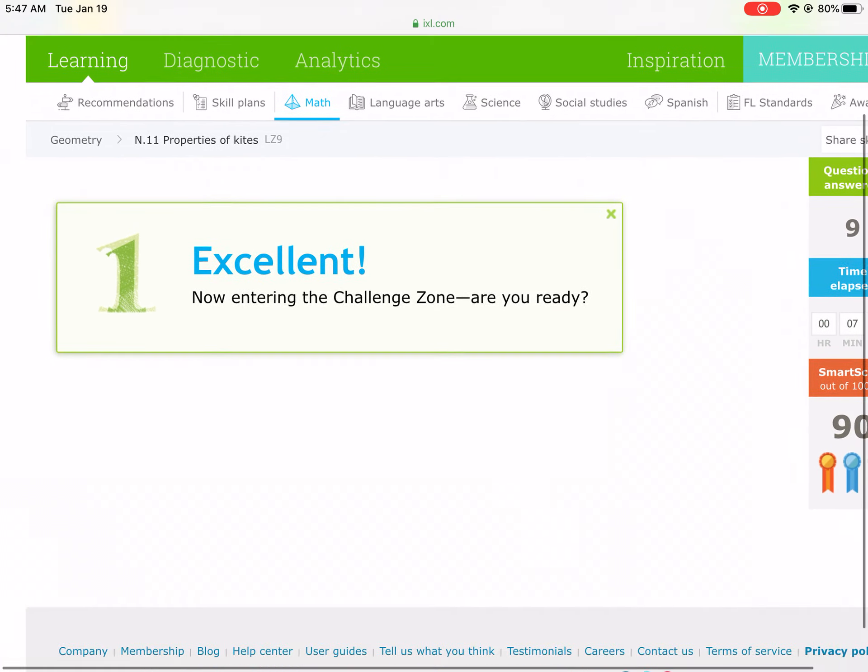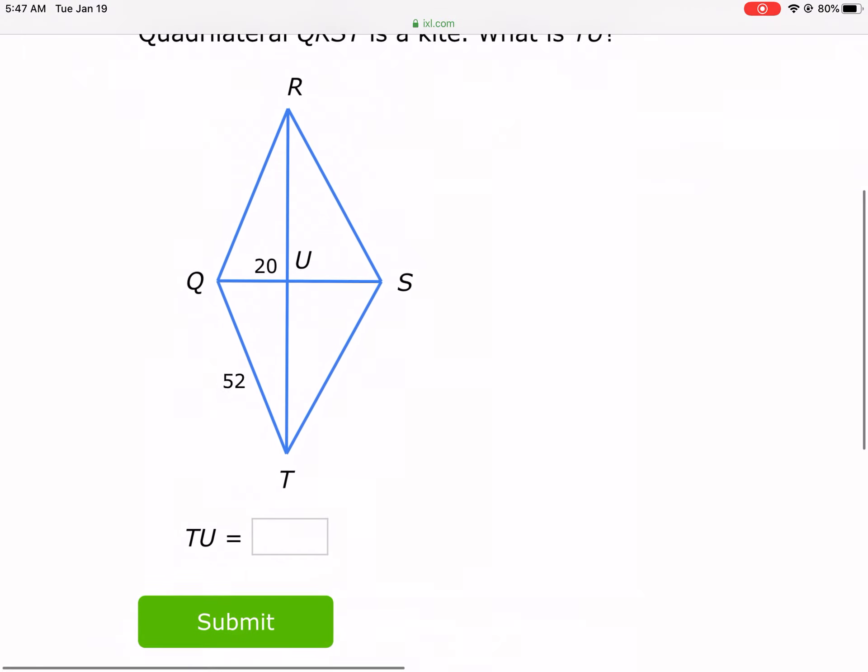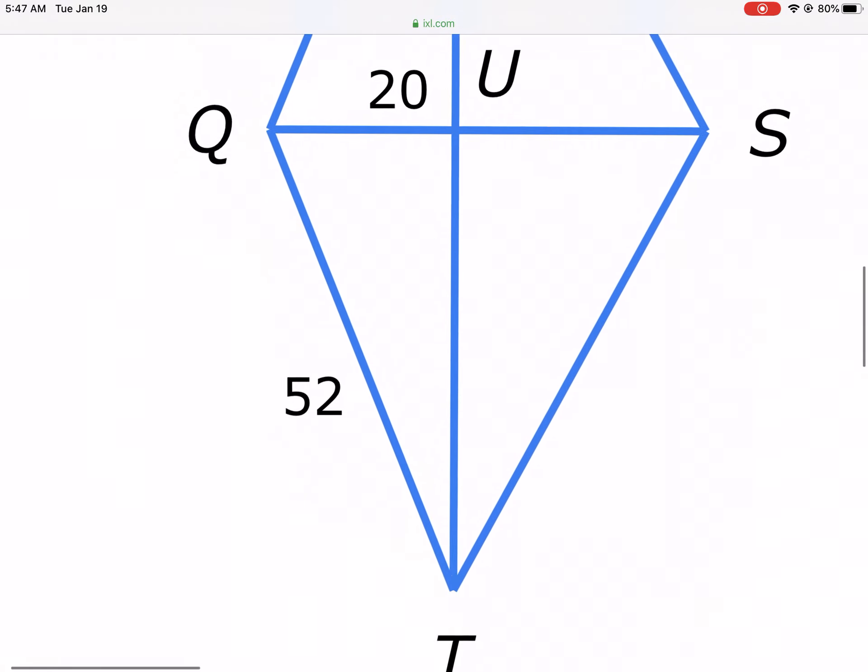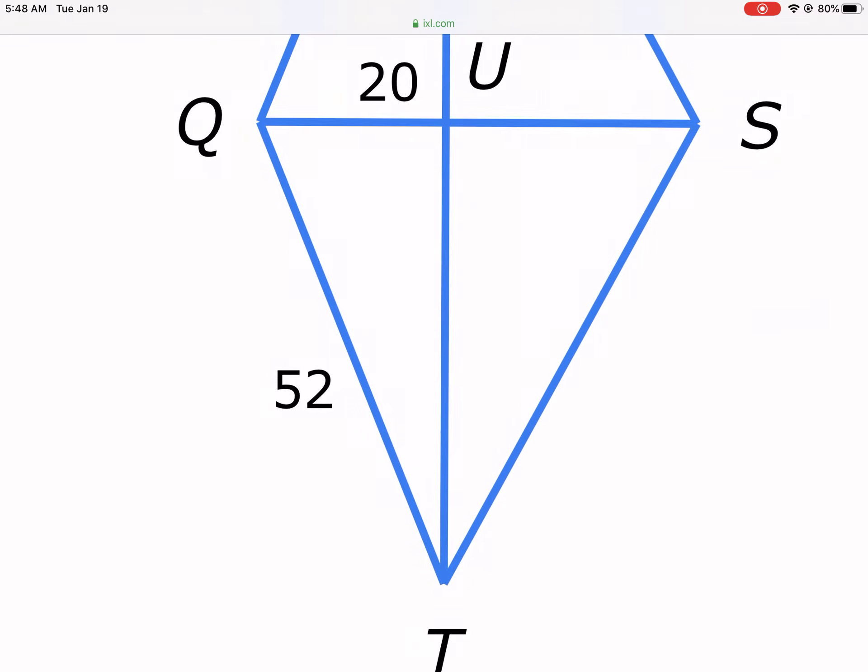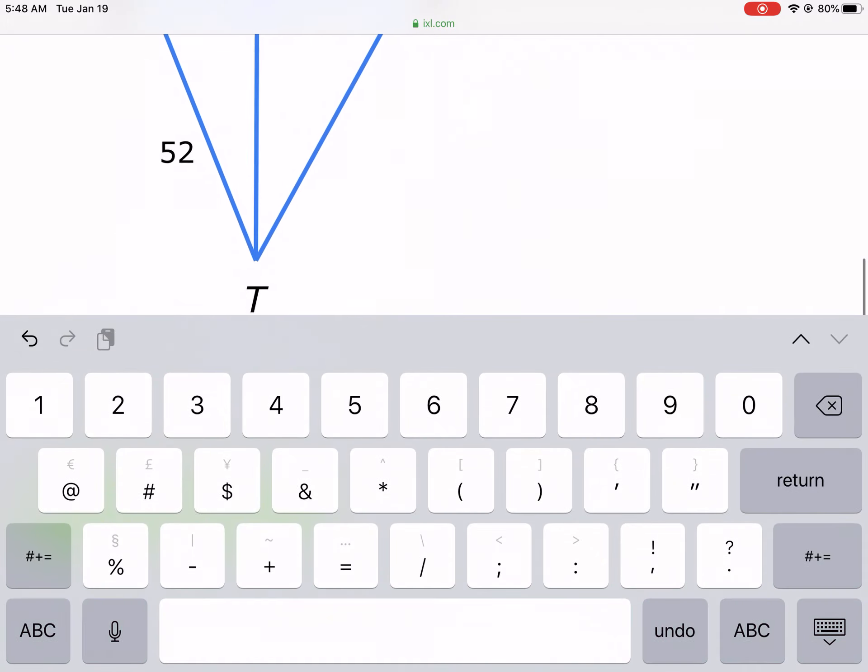Excellent. Now entering the challenge zone, are you ready? What is TU? Okay, so then this is the same process, Pythagorean theorem. We have 52 squared minus 20 squared, that's 400, I know that one. And then we're going to take the square root of that, so we get 48. Again, it's smaller than our hypotenuse, so we're good to go, TU 48.